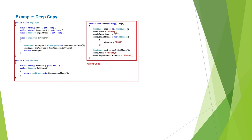Let us understand deep copy with an example. This is the same example as the shallow copy case with two classes, Employee and Address. But now the GetClone method is available in both classes. The Address class GetClone method creates a clone of the Address object. The Employee class GetClone method creates a clone of the Employee object — it first creates a clone object, stores it in an Employee reference variable, then sets the EmployeeAddress by calling the GetClone method of the Address object.